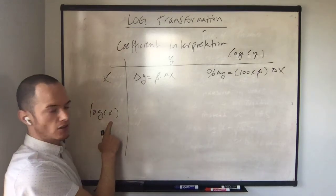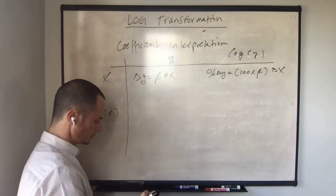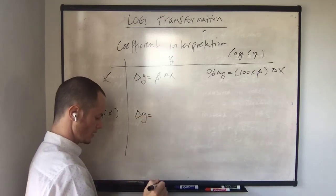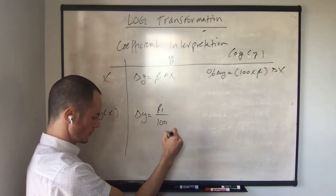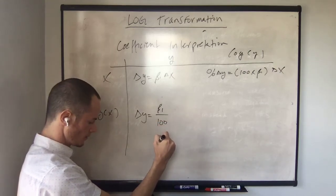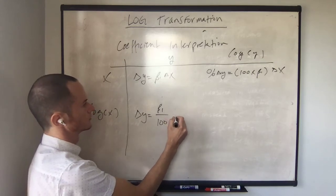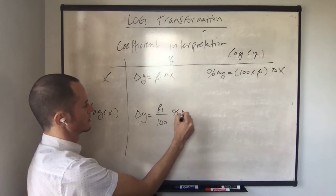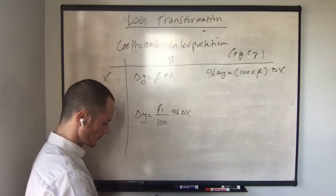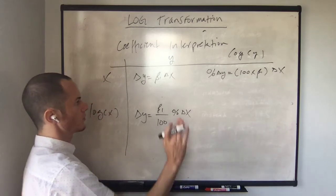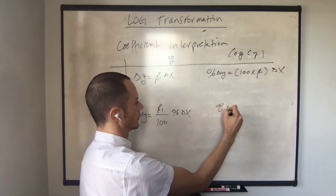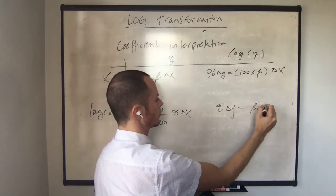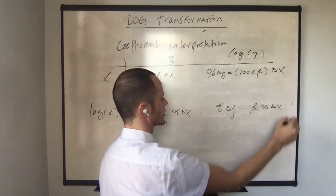For log of x and y not in log form, the change in y is given by beta 1 over 100 times percent change in x. And finally, for the log log model, the percent change in y is equal to beta 1 percent change in x.